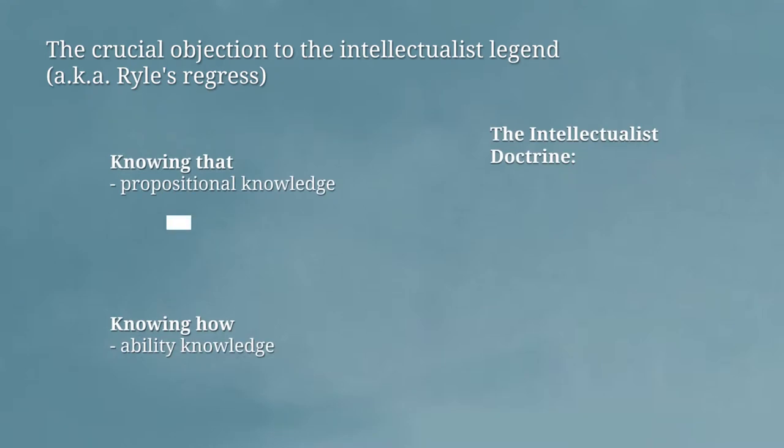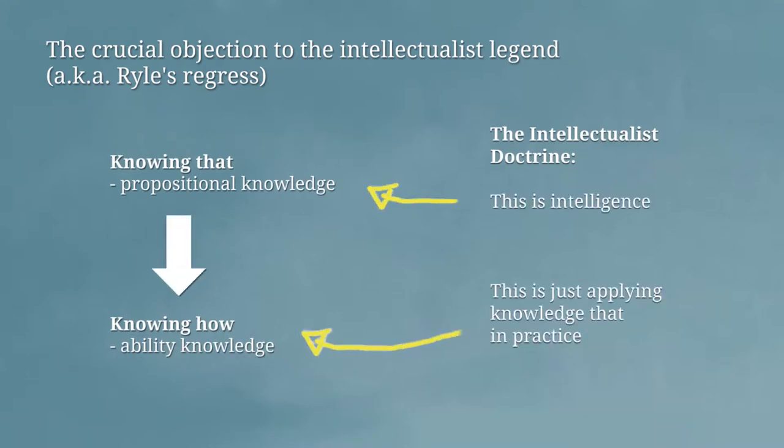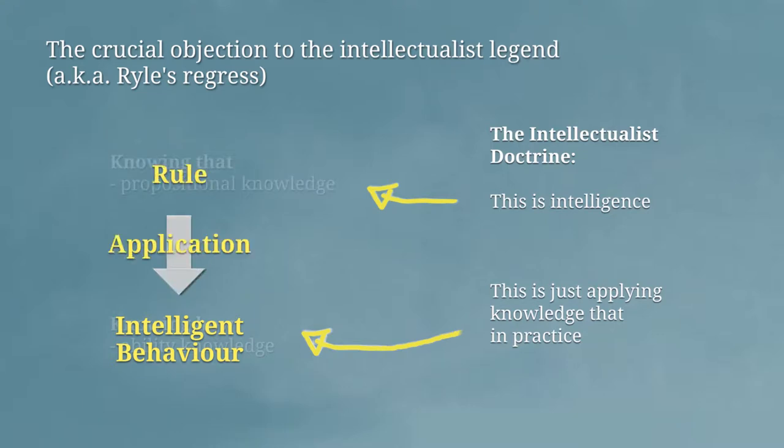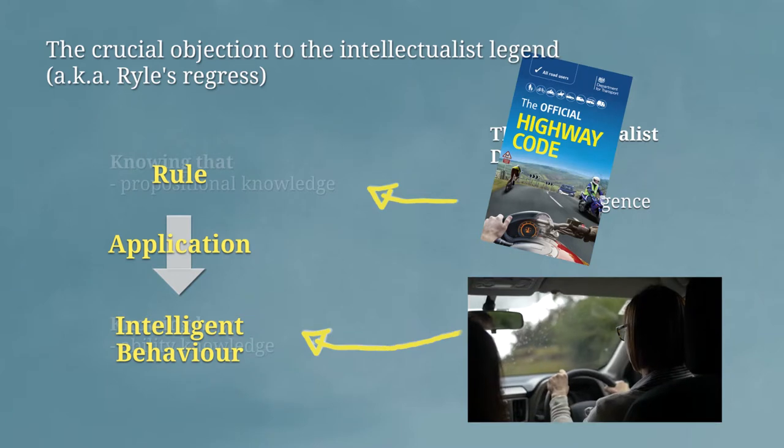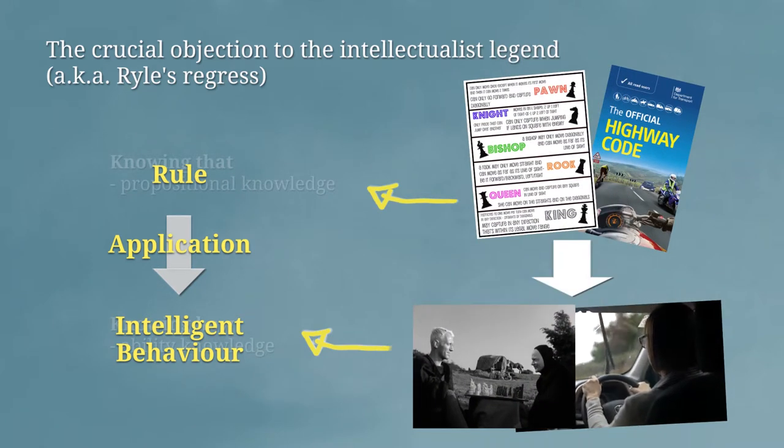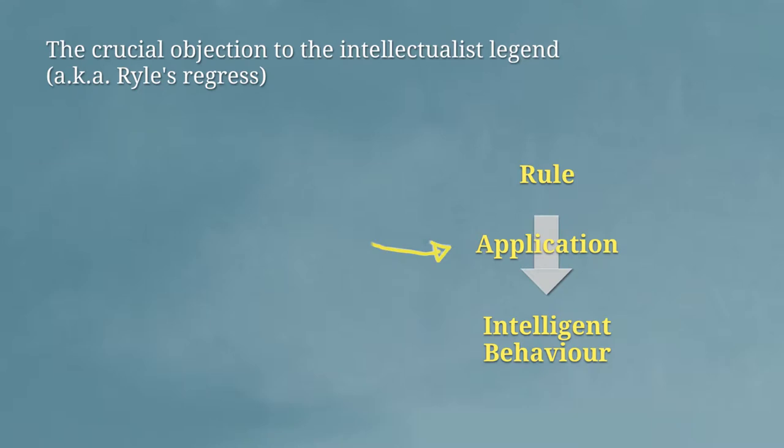What he refers to as the crucial objection to the intellectualist legend. The crucial objection goes as follows. If you are an intellectualist, you're going to say, whenever somebody behaves intelligently, they are applying a rule to the particular case at hand, driving, playing chess, interpreting sentences, behaving politely, thousands of other cases are possibilities. But Ryle will say, the application of a general precept or rule or a bit of propositional knowledge that you take yourself to have to the particular case in hand is something that you can do either better or worse, well or poorly, or somewhere in between. But that means that applying the general precept to the action in question is itself something that is intelligently done or not.